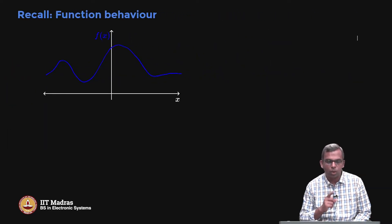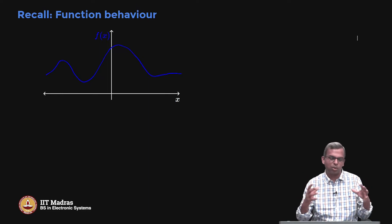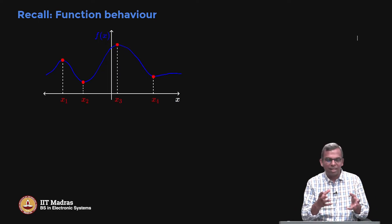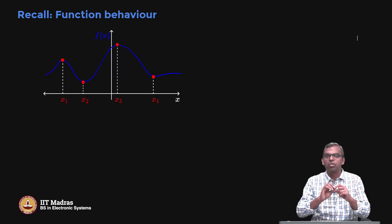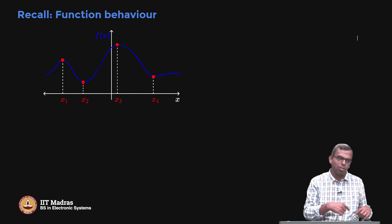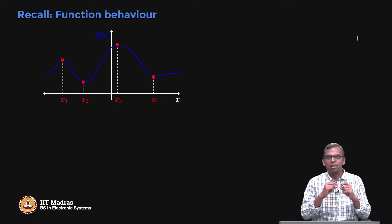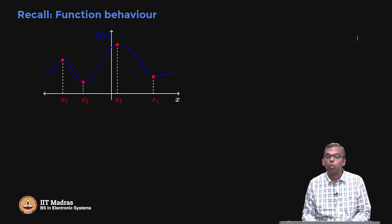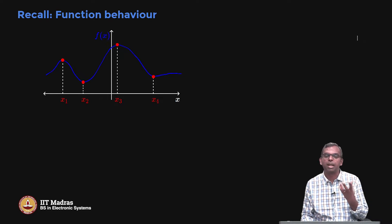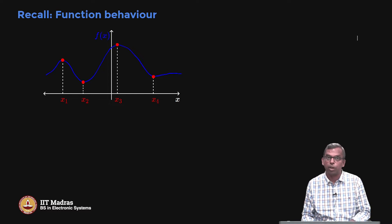To focus our attention, let us look at this notion of function behavior. The function itself might have a different shape — it may go up, come down, etc. There are critical points where the function attains a peak or reaches the bottom-most point, the trough. Derivative plays an extremely important role in assessing function behavior by evaluating its value and derivatives at a particular point.